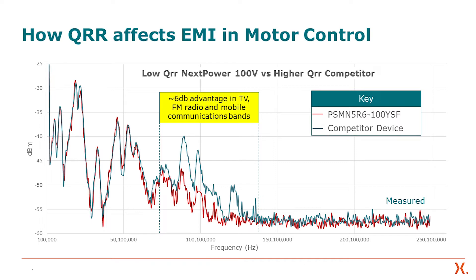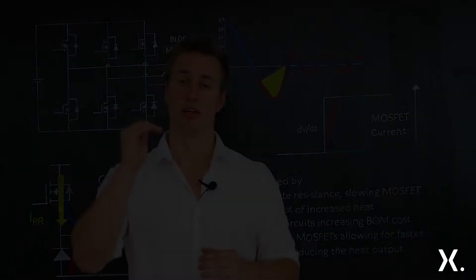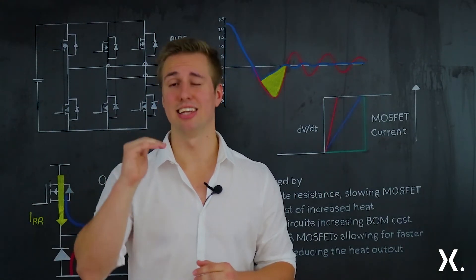The two devices are very similar, nearly identical besides the QRR value. That's the difference. Nexperia device has a 50% lower QRR. As you can see, in the TV and radio band, the Nexperia device is 10 dB lower.